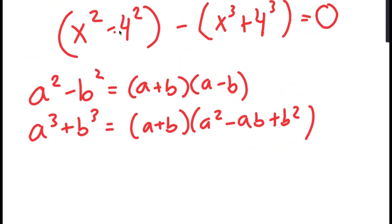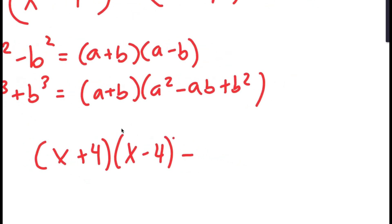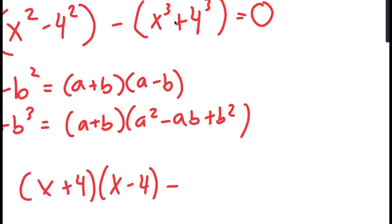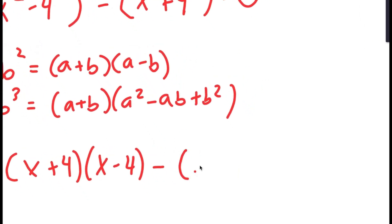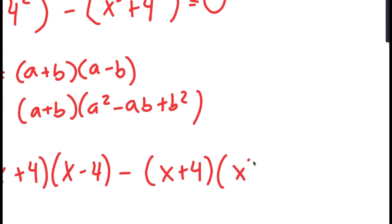So for x squared minus 4 squared, it's going to turn into x plus 4 times x minus 4. And for x to the power of 3 plus 4 to the power of 3, it's going to turn into x plus 4 times x squared minus 4x plus 16.